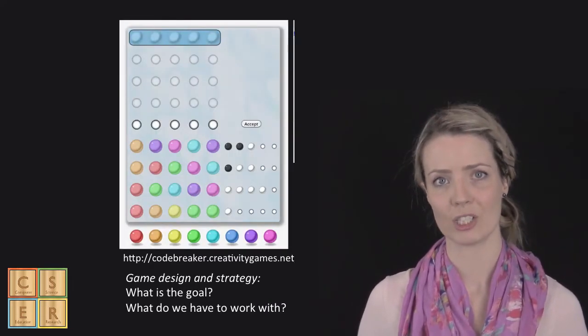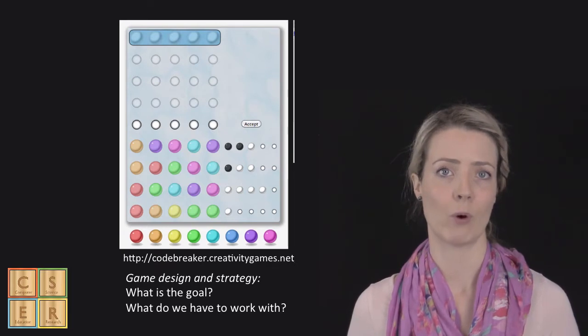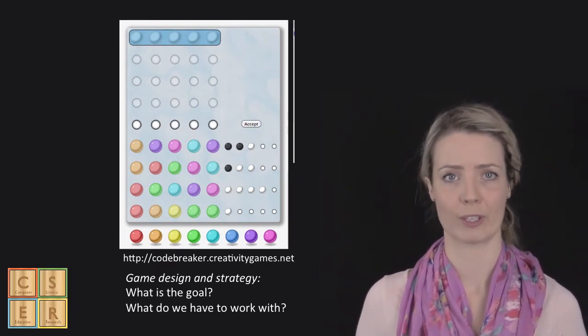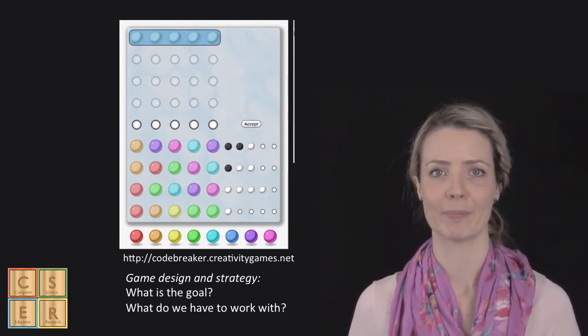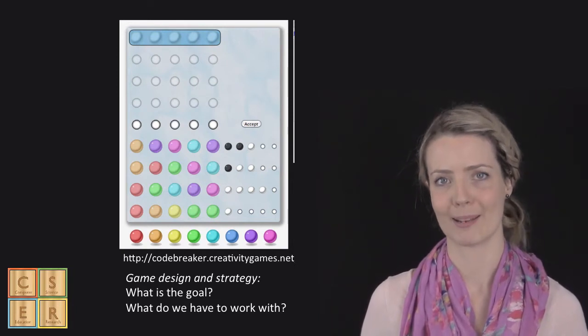In years three to four, this could involve developing strategies and identifying parameters and what might be available to work with. For example, in Codebreaker, players have a certain number of colours and peg spaces.